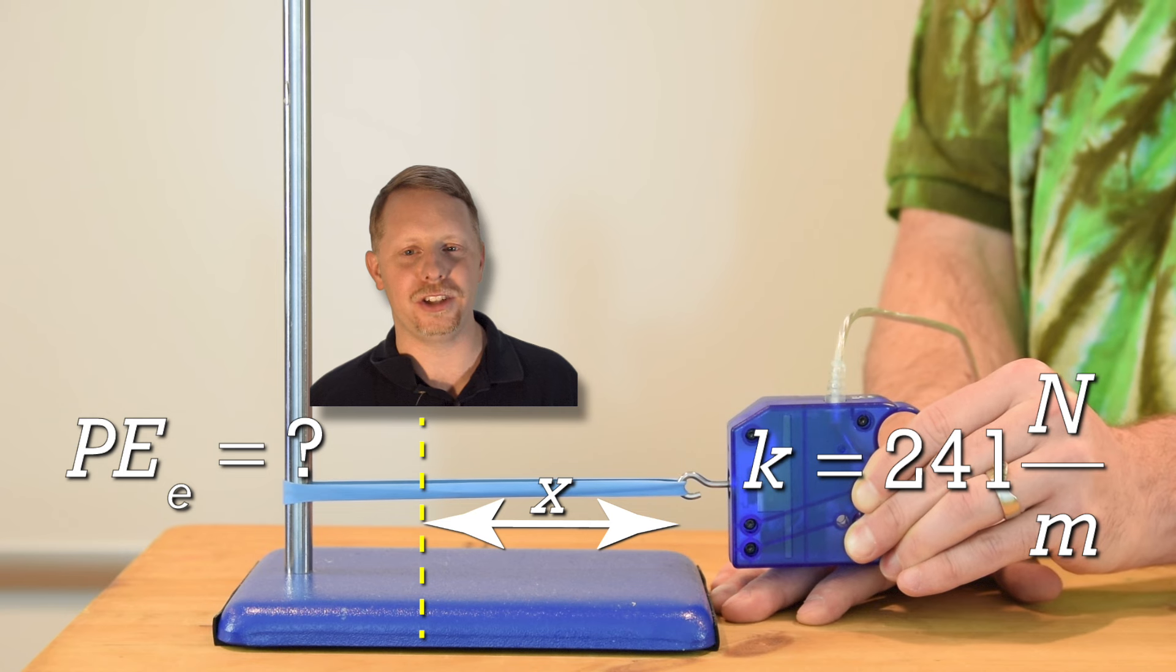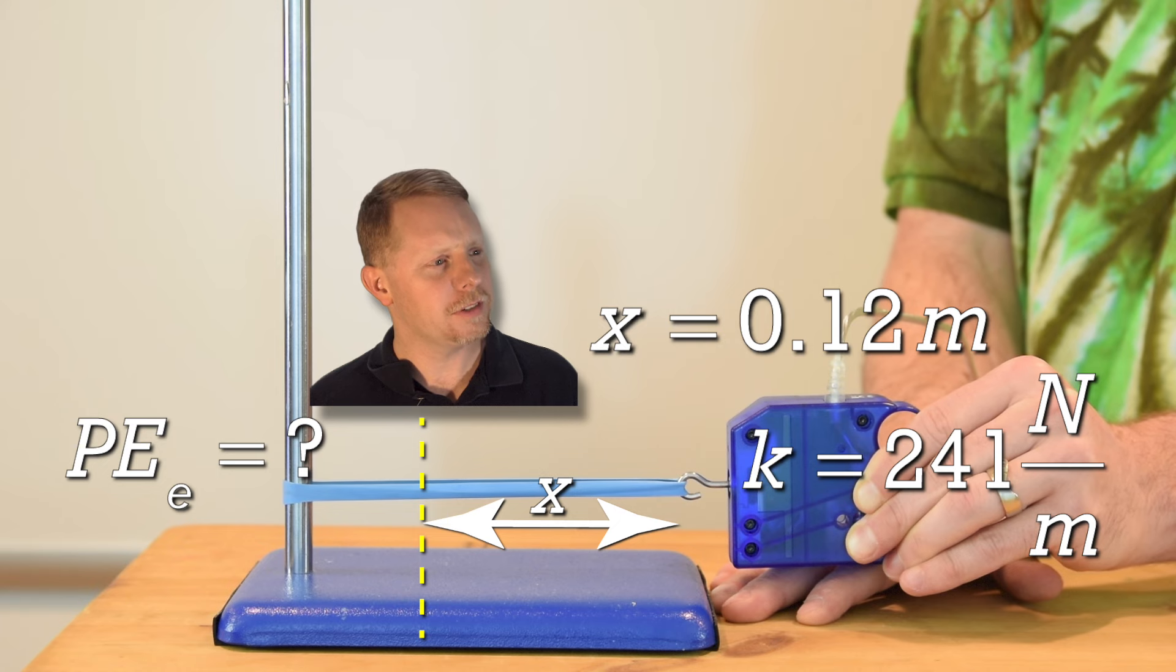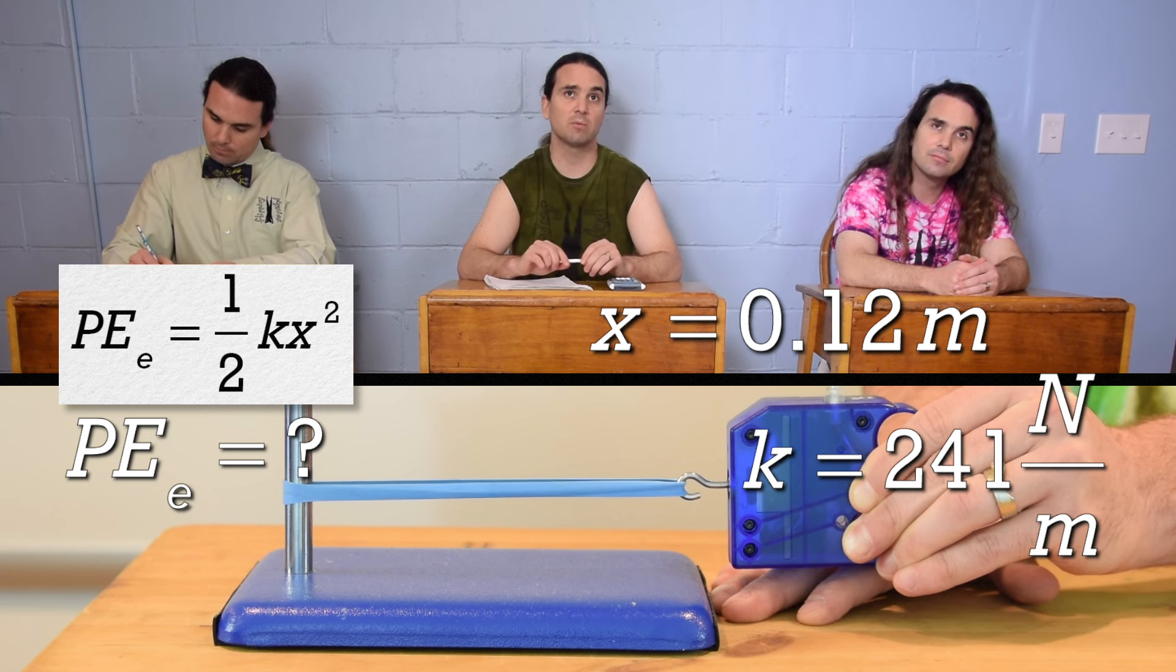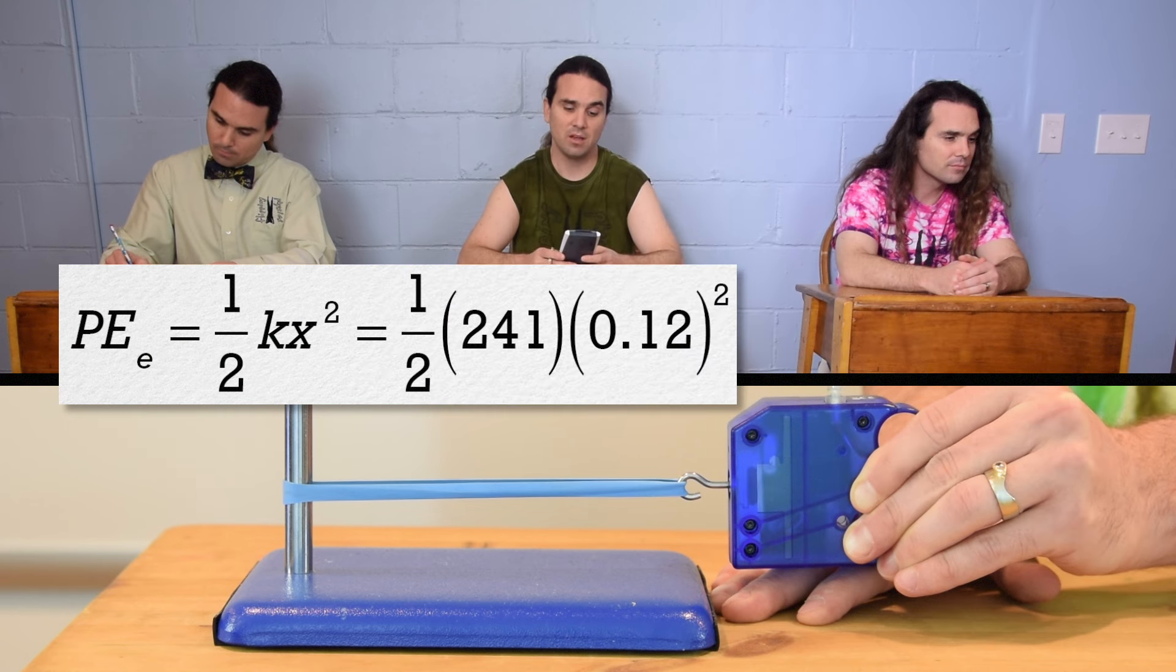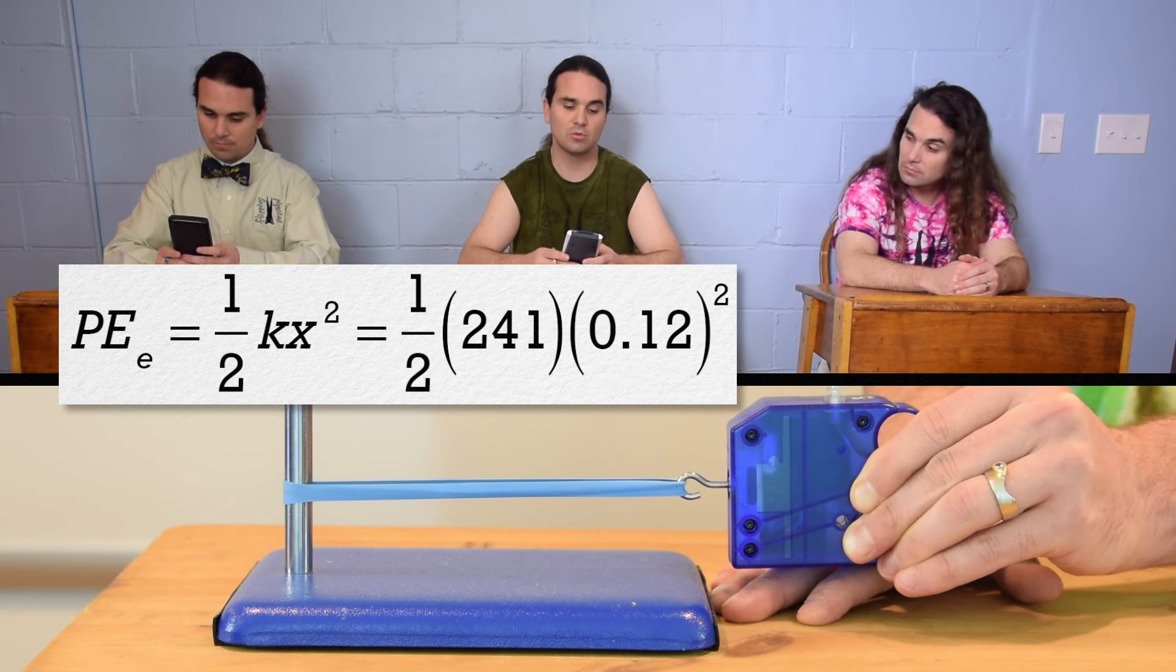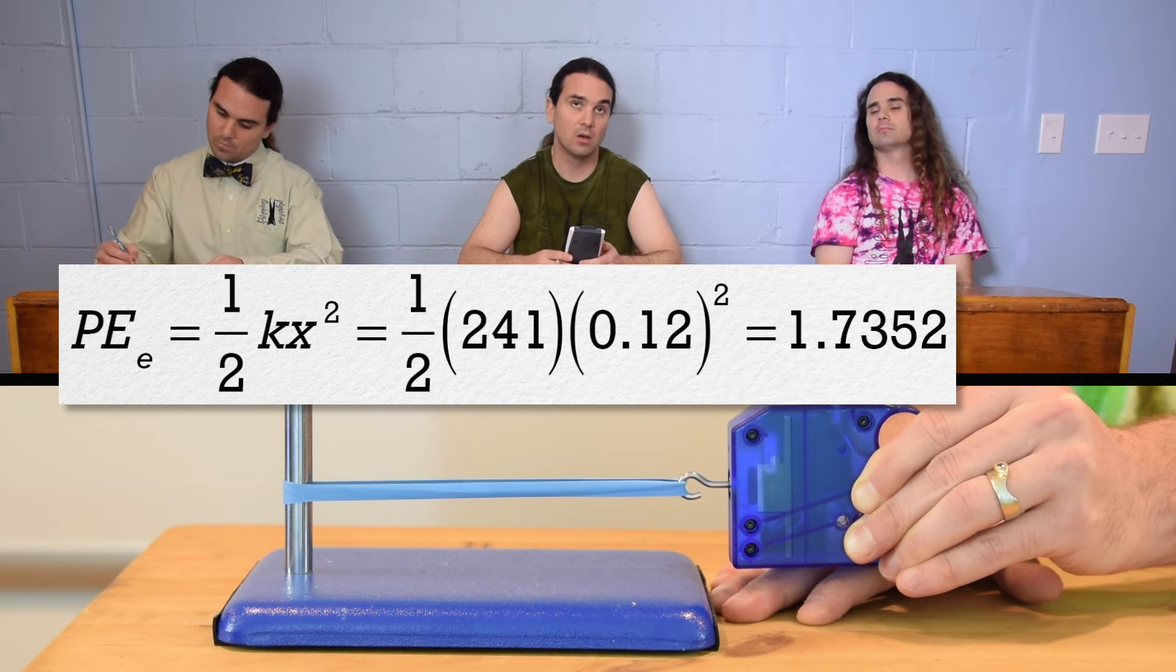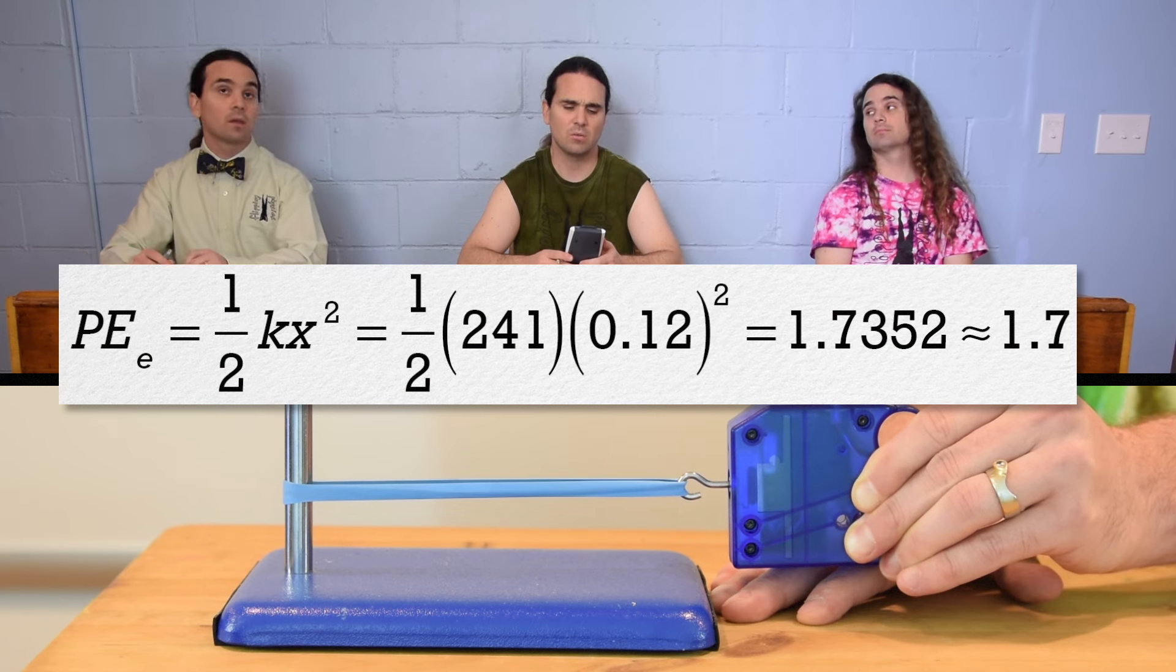Let's determine the elastic potential energy stored in the rubber band when it is elongated by 12 centimeters, or 0.12 meters. Actually, Bobby, would you mind doing that for us? Sure. Thanks. Well, elastic potential energy is one-half the spring constant times the displacement from equilibrium position squared, so it equals one-half times 241 times 0.12 squared, which is 1.7352 or 1.7 with two significant digits, but what are the units?